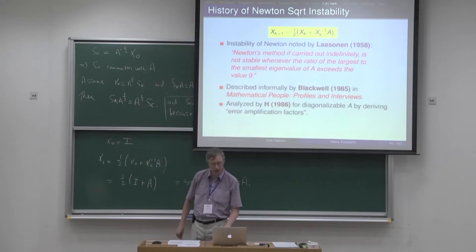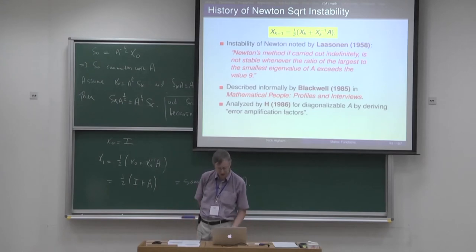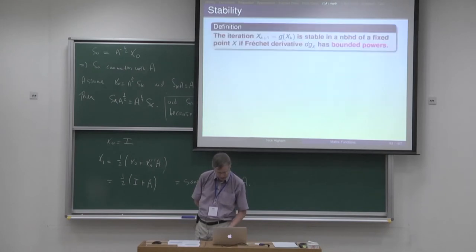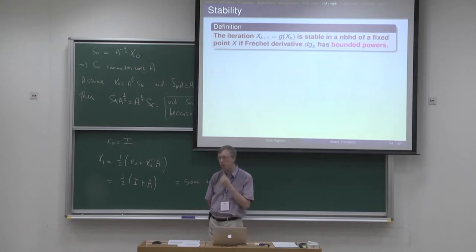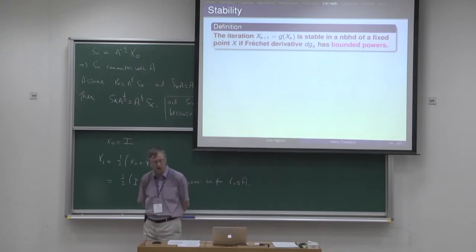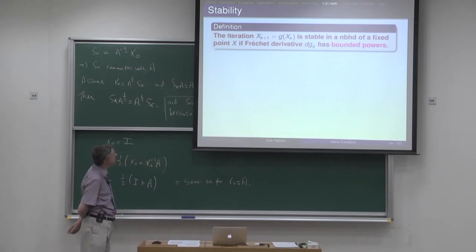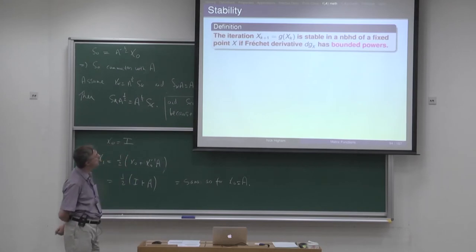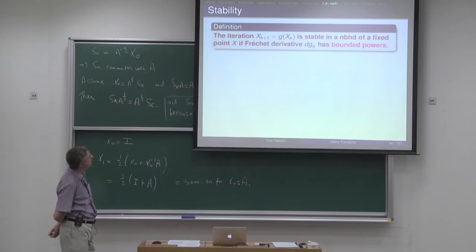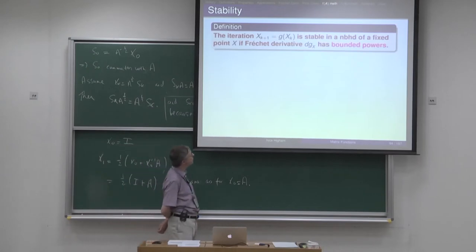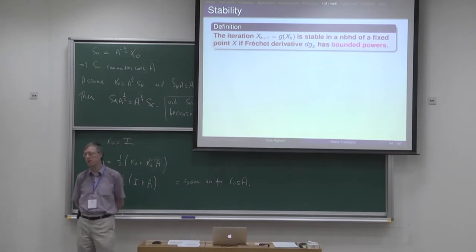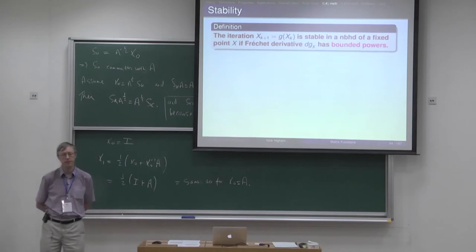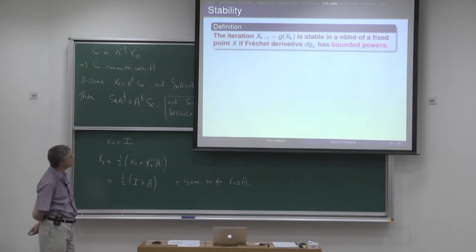Here's the way I think is now the best way to do this — a general approach to analysing stability of an iteration. The definition is that we have an iteration x_{k+1} equals g of x_k, with a fixed point x that we want to compute. The iteration is stable around the fixed point if the Fréchet derivative of the iteration function has bounded powers. That's a general definition for any iteration.